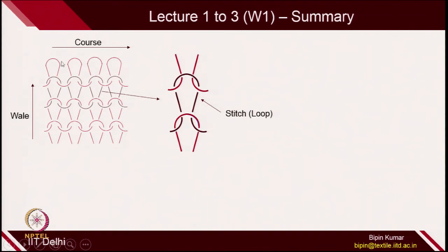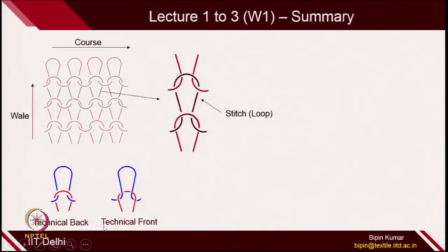The first terminology is the course, which is the series of loops in the horizontal direction. The wale is the column of loops in the vertical direction. We also gave more emphasis on technical back, where you make the loop on the back side of the old loop, and technical front, where you make the loops on the front side of the old loop.